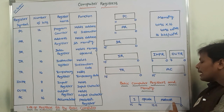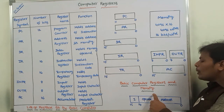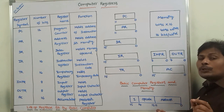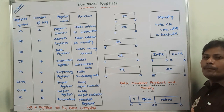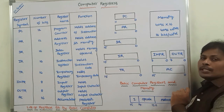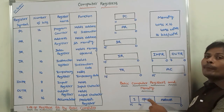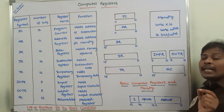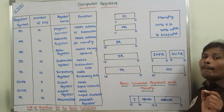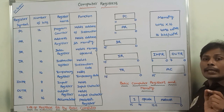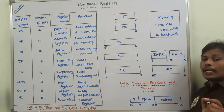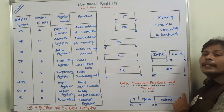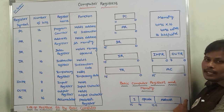The opcode part specifies what operation is to be performed. To perform the operation specified in the opcode part, we require operands. These operands are stored in the memory or in registers at a particular address. These addresses are specified in the address part of the instruction.